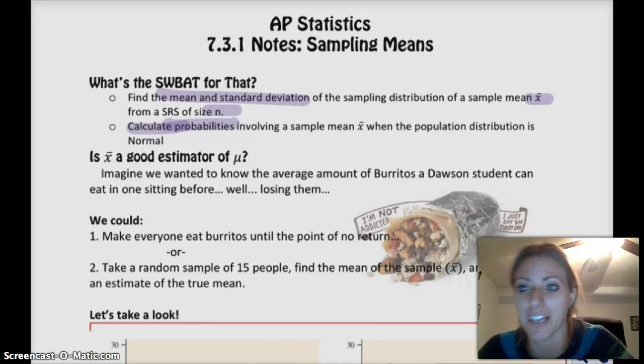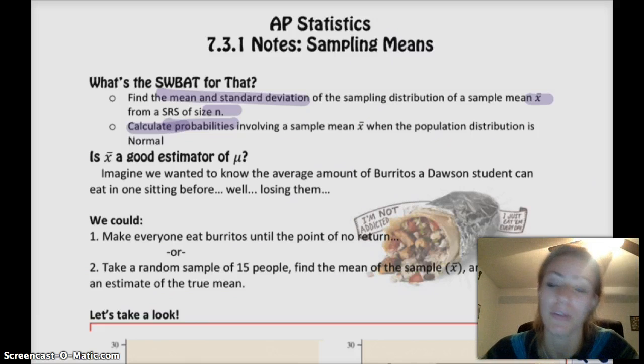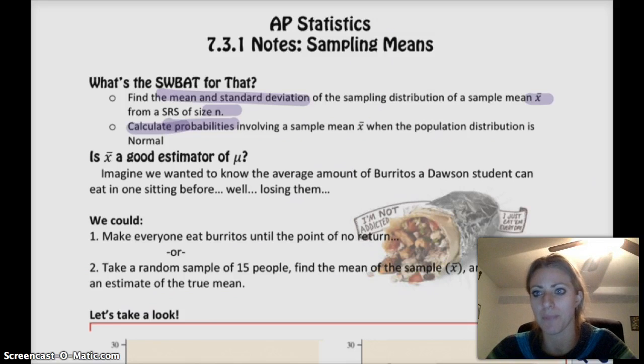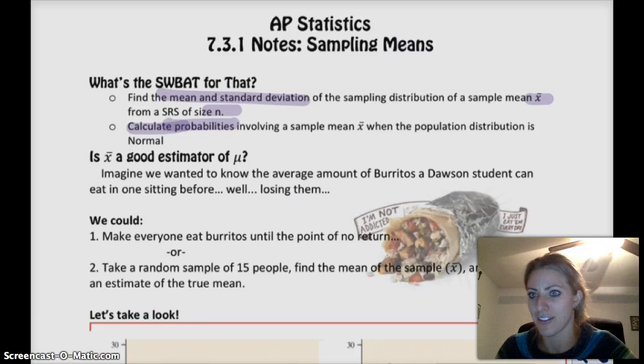Yay, that's so much fun. Okay, so we could do one of two things. One, we could find the actual true mean number of burritos by making every single person in Dawson eat a burrito until they pass out, essentially. Or, so the problem with that is that the little kids, I would feel really, I think that's like cruel and unusual punishment. So, I think we probably shouldn't do that. So instead, we should probably do a random sample.